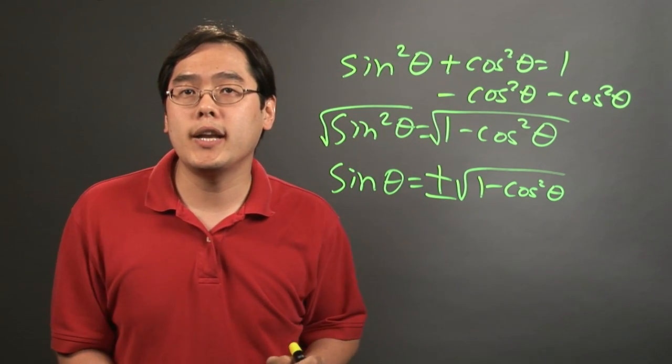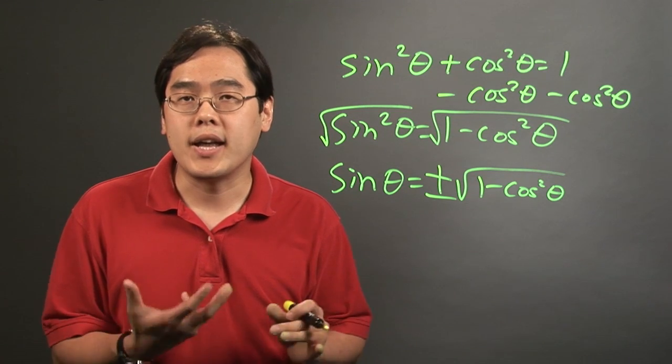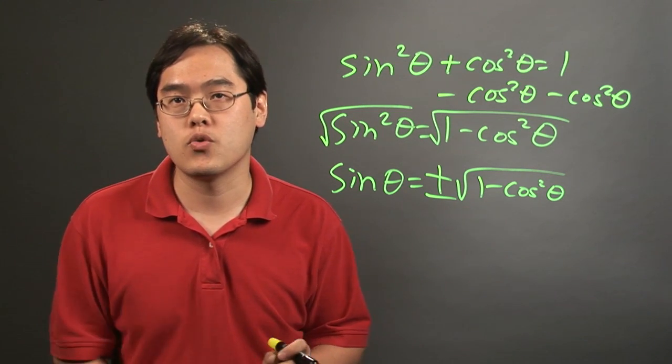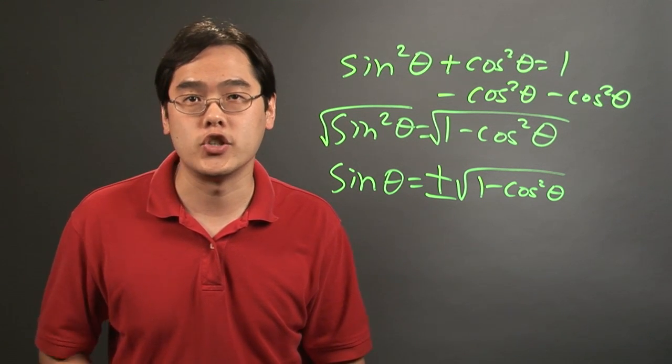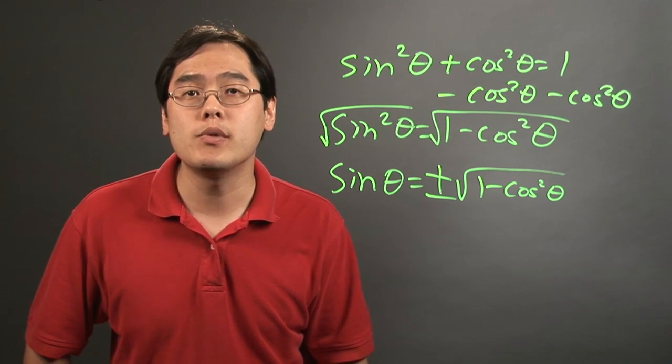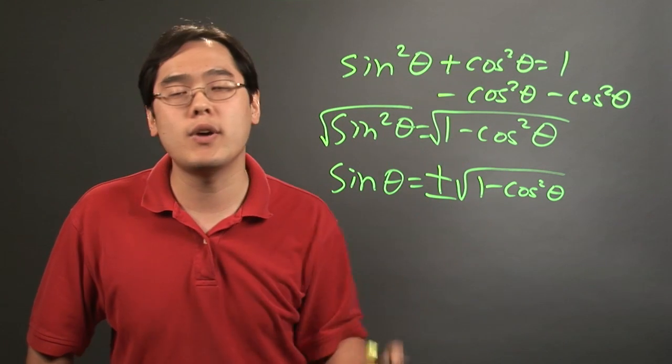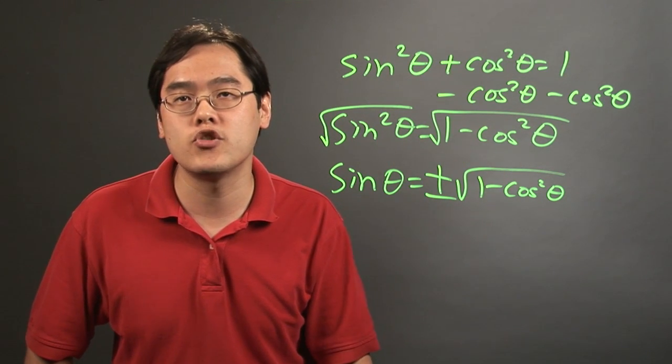So the bottom line is when it comes to solving identity equations in trigonometry, you want to be sure what you're solving for, which term you want to isolate, and then just use algebra and go from there. I'm Jimmy Chang and this is a brief overview of how to solve identity equations in trigonometry.